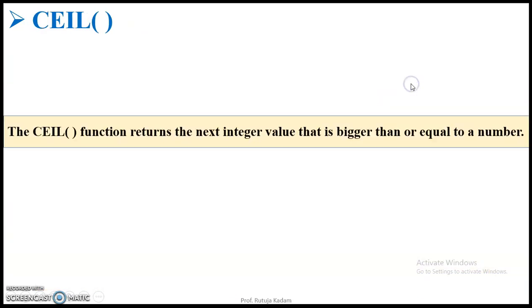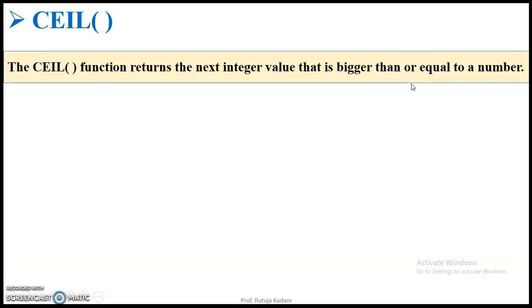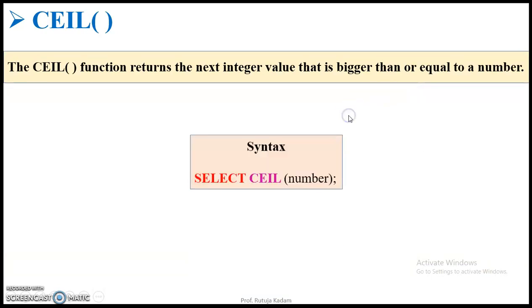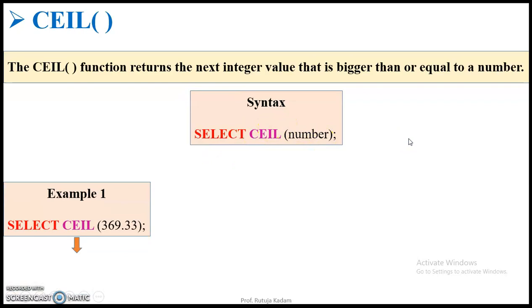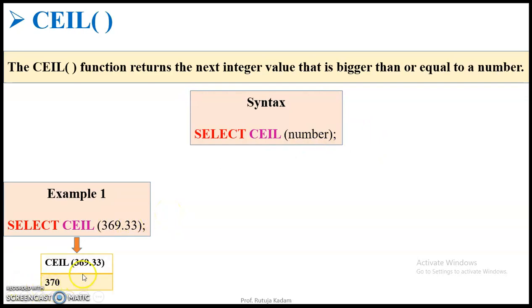Then comes the ceil function. This ceil function returns the next integer value that is bigger than or equal to a number. The syntax is: SELECT CEIL(number). For example, SELECT CEIL(369.33) — the next integer bigger than 369.33 is 370, so the output is 370.